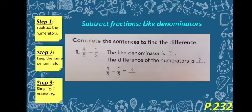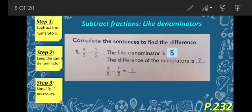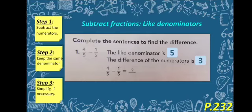Now let's move on to our book. Please open your book to page 232 and let's solve the first question together. Complete the sentence to find the difference: 4 over 5 minus 1 over 5. The like denominator is 5, so we just write 5. The difference of the numerators is 4 minus 1 equals 3. So 4 over 5 minus 1 over 5 equals 3 over 5.